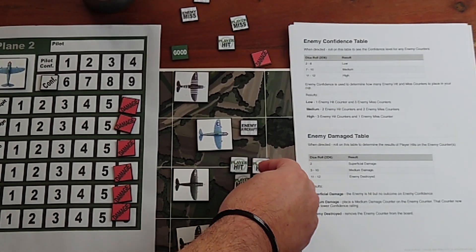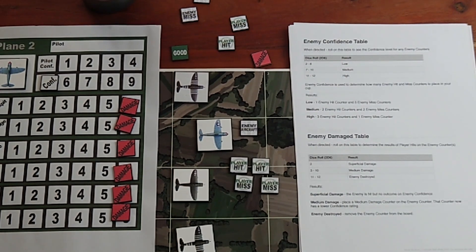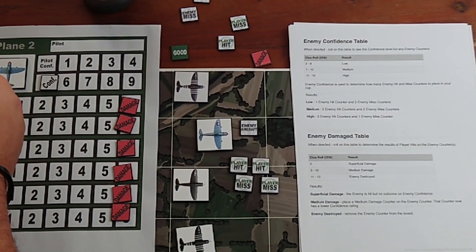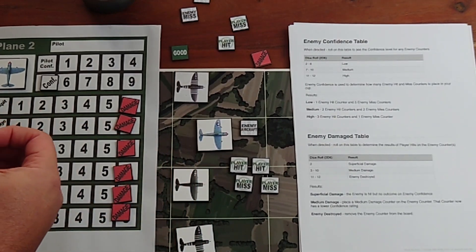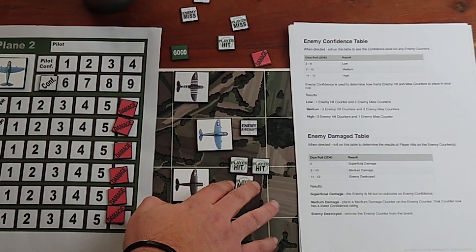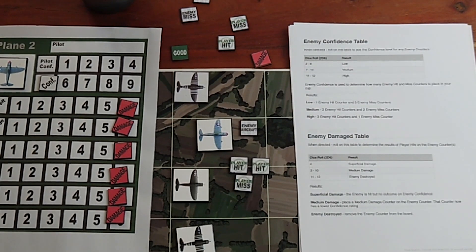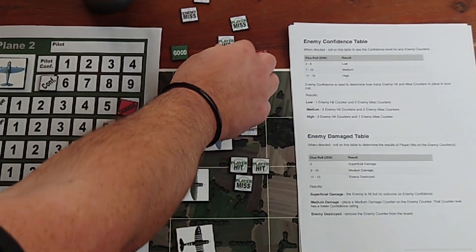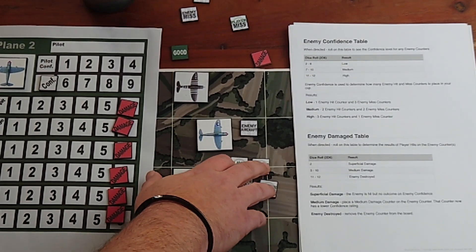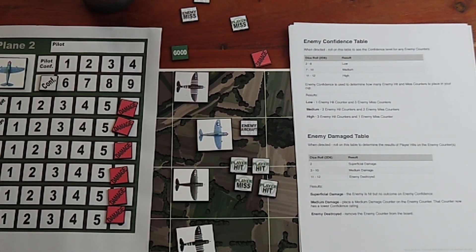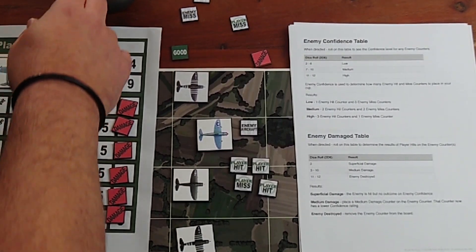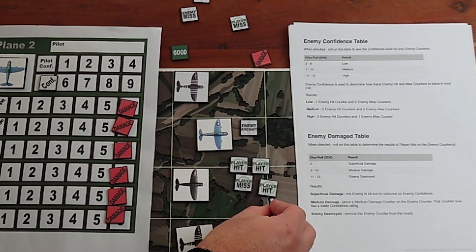Before I place them in, this is an important step: I can, if I wish, spend a confidence point from that pilot to remove a miss counter. That means there's one less player miss counter going in the cup. I can, if I spend another point, add a player hit counter. That will mean there's now more player hit counters going into the cup.